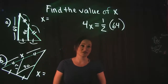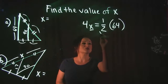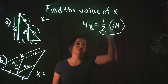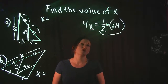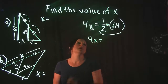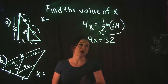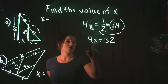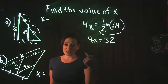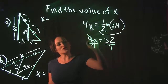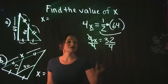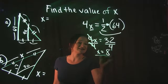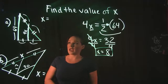Now we just need to solve this equation for x. First, simplify the right-hand side: one half of 64 is 32. So the equation becomes 4x = 32. Since this is 4 times x, the opposite of multiplication is division — divide both sides by 4. That cancels the 4 on the left, leaving x = 32 ÷ 4, which is 8. So x is equal to 8 for this example.